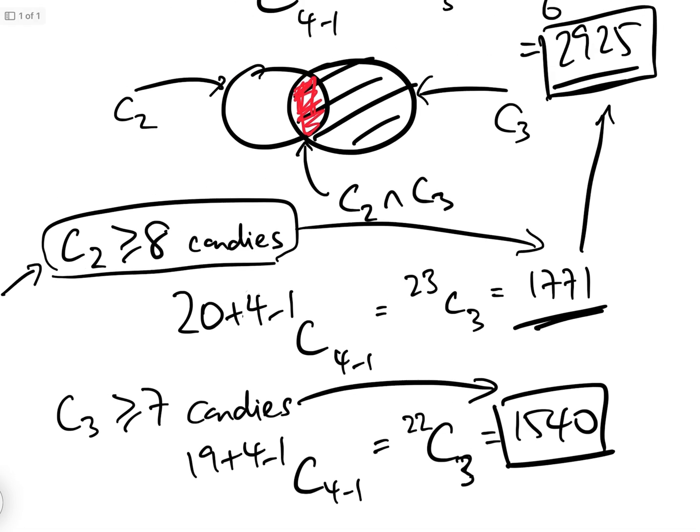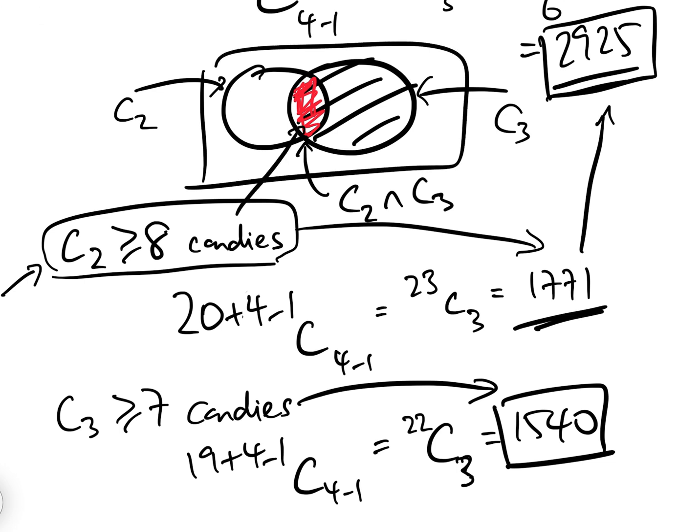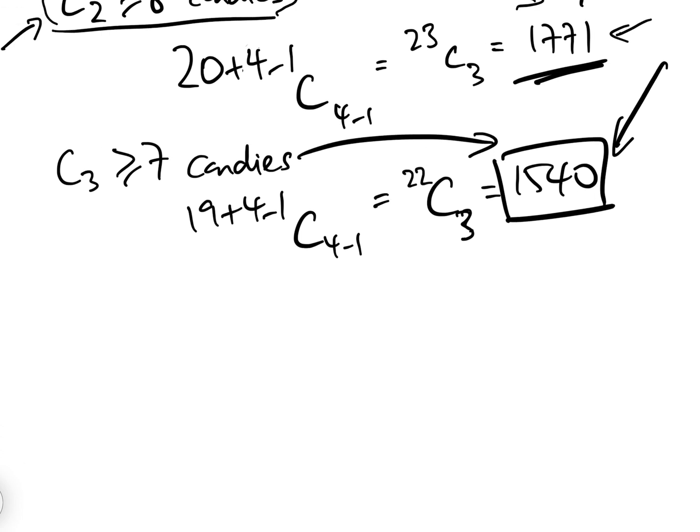And so finally, what we've got to do is we have to add back, because we've actually taken away twice the possibility that C2 is greater than or equal to 8 and C3 is greater than or equal to 7, so we have to add that back in. So let's give C2 eight candies and let's give C3 seven candies, which means we've got 15 candies left. How many options are there there? Well, it's 15 add 4 minus 1, C4 minus 1, which is 18C3, which equals 816.